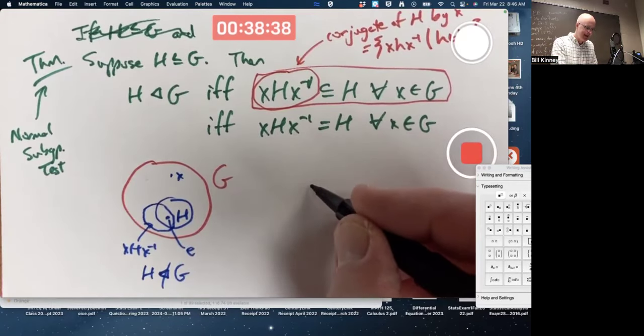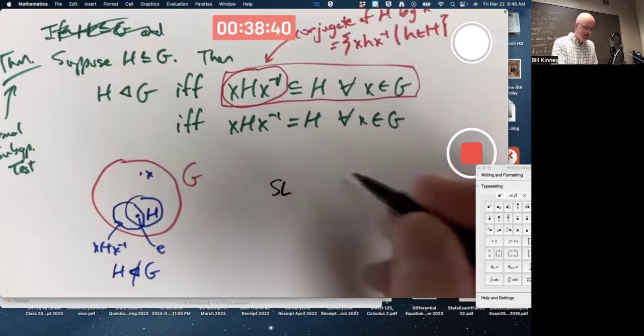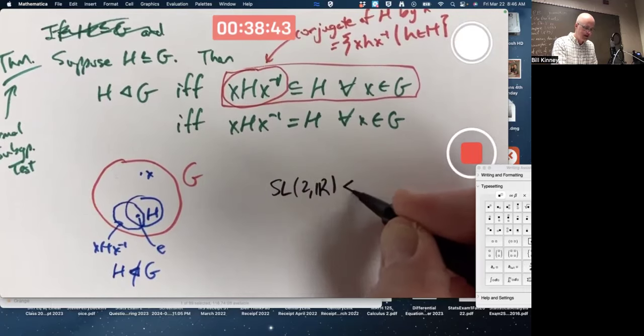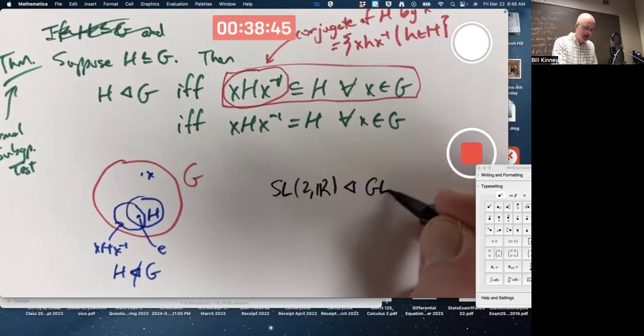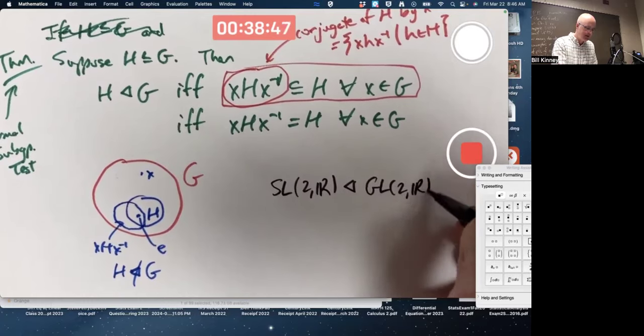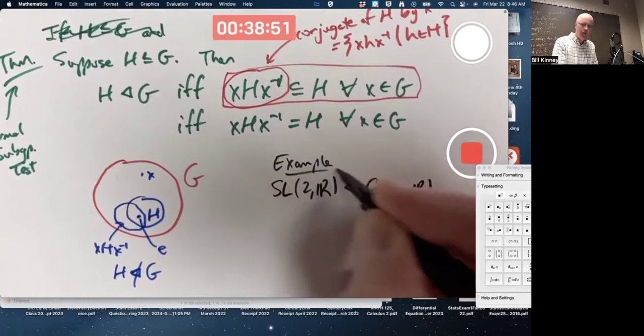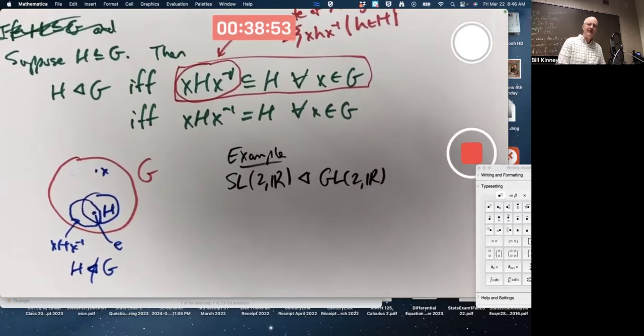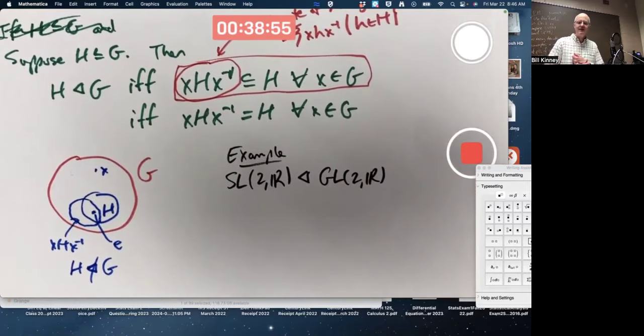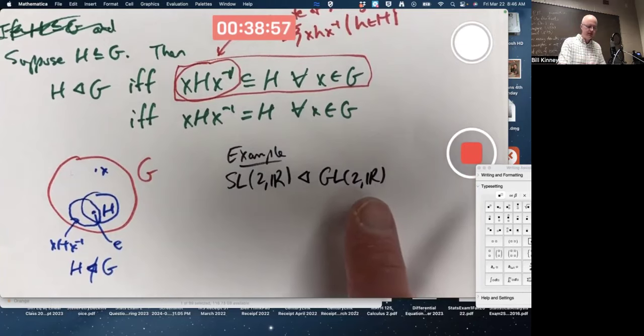The claim is that SL(2,R) is a normal subgroup of GL(2,R). This is an example. What are these things again? I'm not going to write down the set description of these, but I'll just verbally describe them.